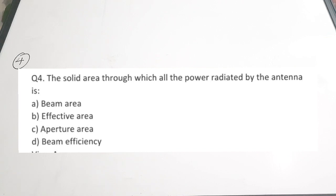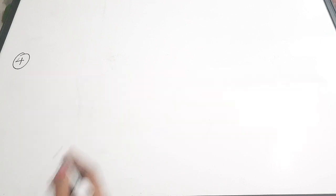The fourth question is connected to solid area. The solid area through which all the power radiated by the antenna passes is called — A. Beam area, B. Effective area, C. Aperture area, D. Beam efficiency. That is nothing but the beam area — the solid area through which all power is radiated is called the beam area. Correct answer is option A. These topics are also covered in the antenna formula revision video and the antenna types video in the playlist.